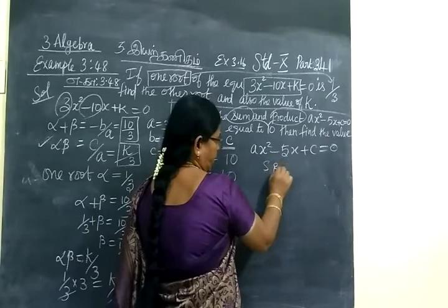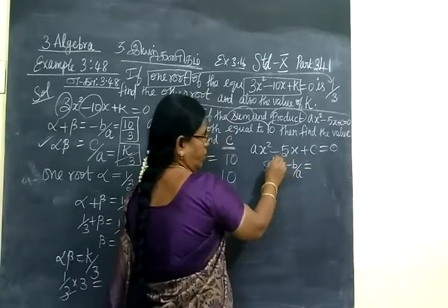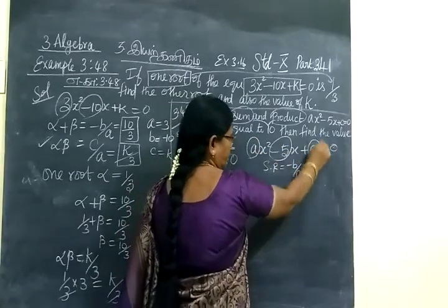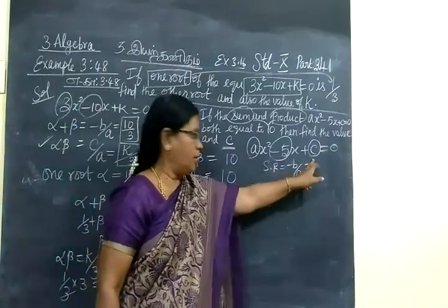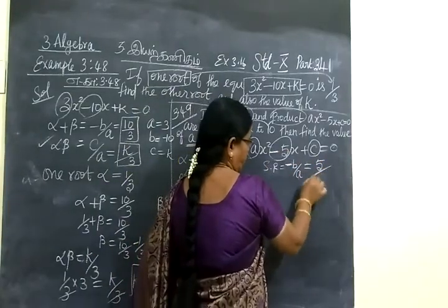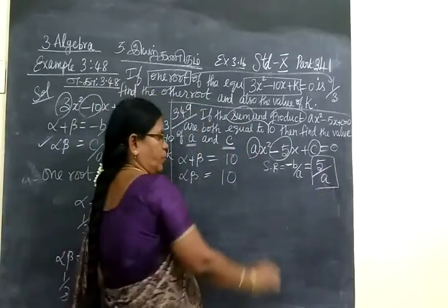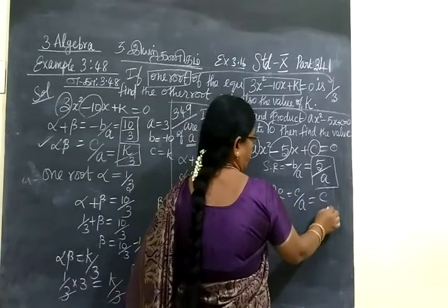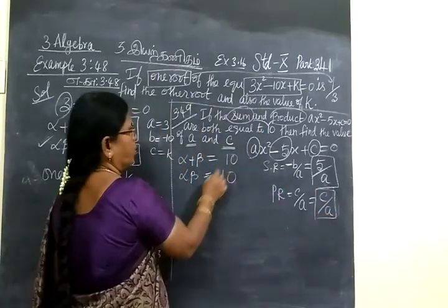Sum of the root formula is minus b by a. Here a, b, c are identified: a is a, b is minus 5, c is c. So sum of the roots equals 5 by a. Then product of the roots equals c by a, where c is c itself and a is a. So product equals c by a.